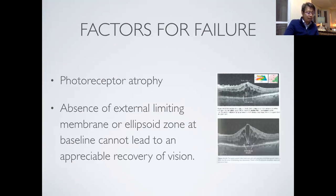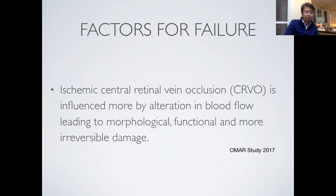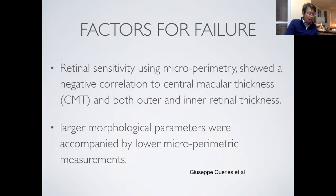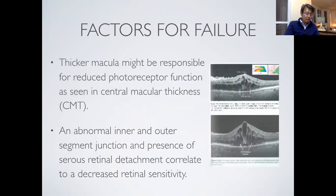Long-standing CME unresponsive to anti-VEGF therapy leads to photoreceptor atrophy. The absence of the ELM or ellipsoid zone at baseline cannot lead to appreciable recovery of vision. In ischemic CRVO, it is more influenced by alterations in blood flow, rapidly leading to morphological, functional, and probably irreversible damage. In one study where microperimetry was used, retinal sensitivity showed a negative correlation to macular thickness. In both outer and inner retinal thickness, larger morphological parameters were accompanied by lower microperimetric measurements. A thicker macula might be responsible for reduced photoreceptor function. An abnormal inner and outer segment junction and presence of serous retinal detachment at baseline correlate to decreased retinal sensitivity.